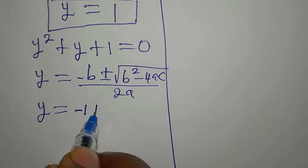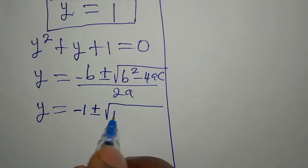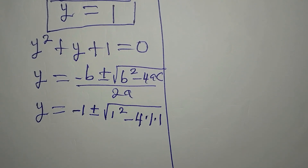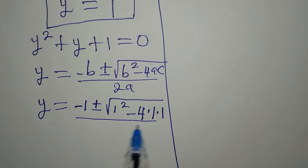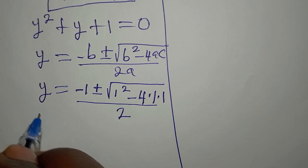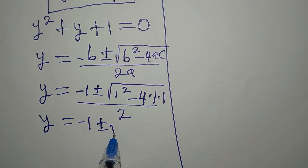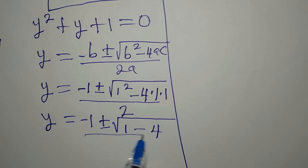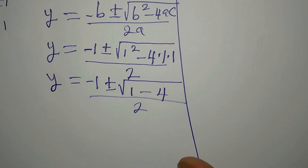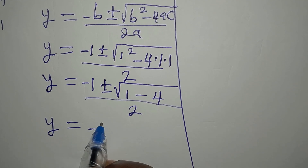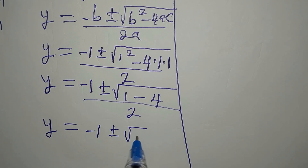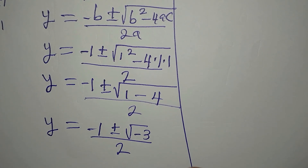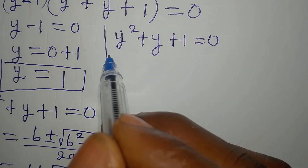Substituting: y = (-1 ± √(1² - 4·1·1)) / (2·1). That gives y = (-1 ± √(1 - 4)) / 2. Simplifying inside the square root: 1 - 4 = -3, so y = (-1 ± √(-3)) / 2.